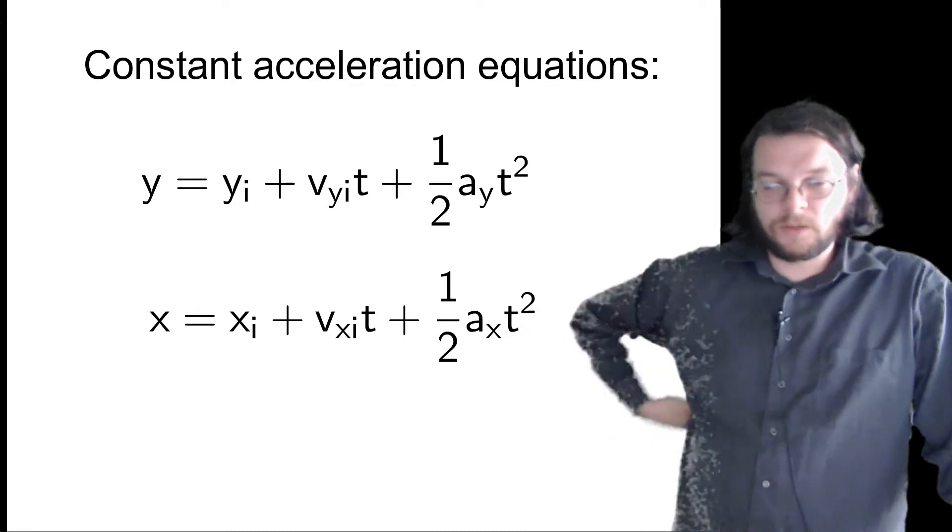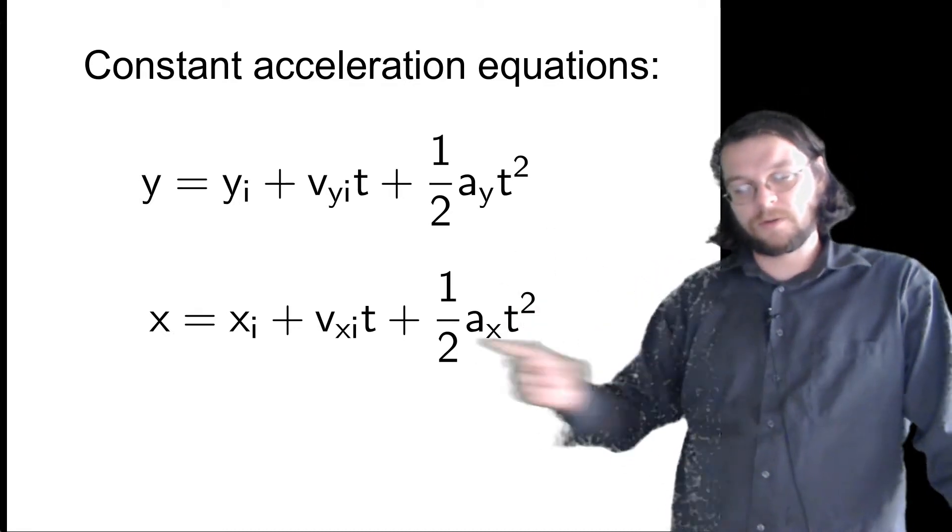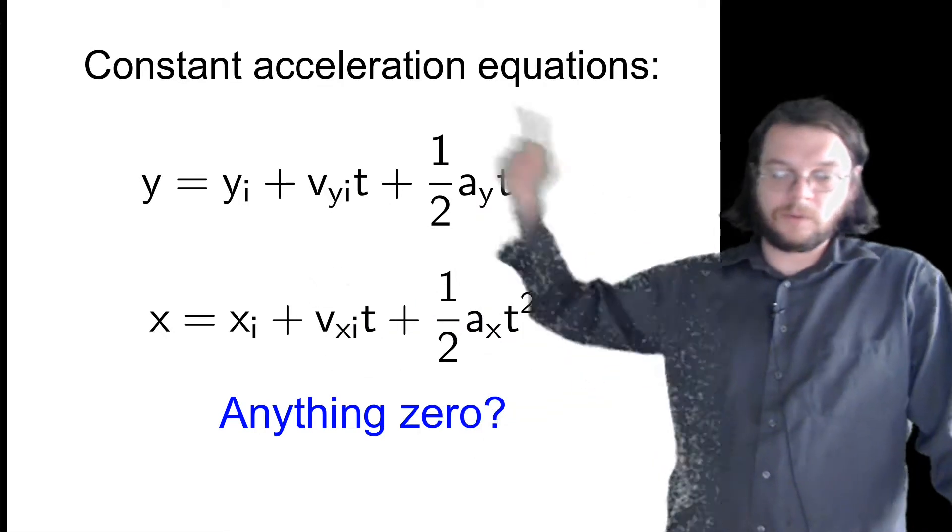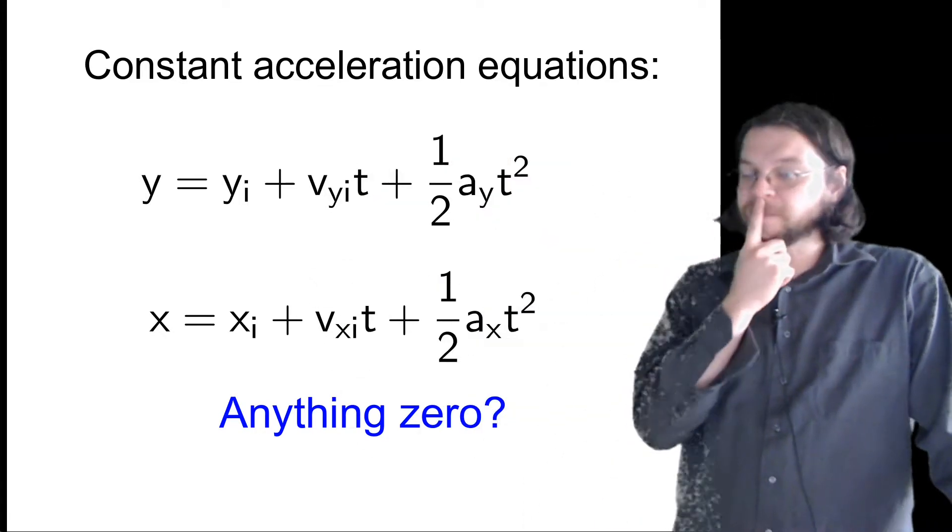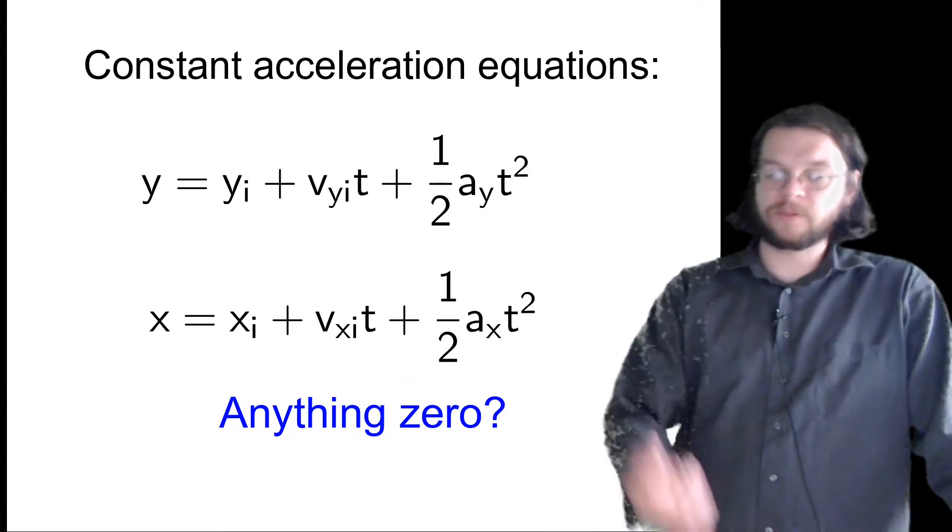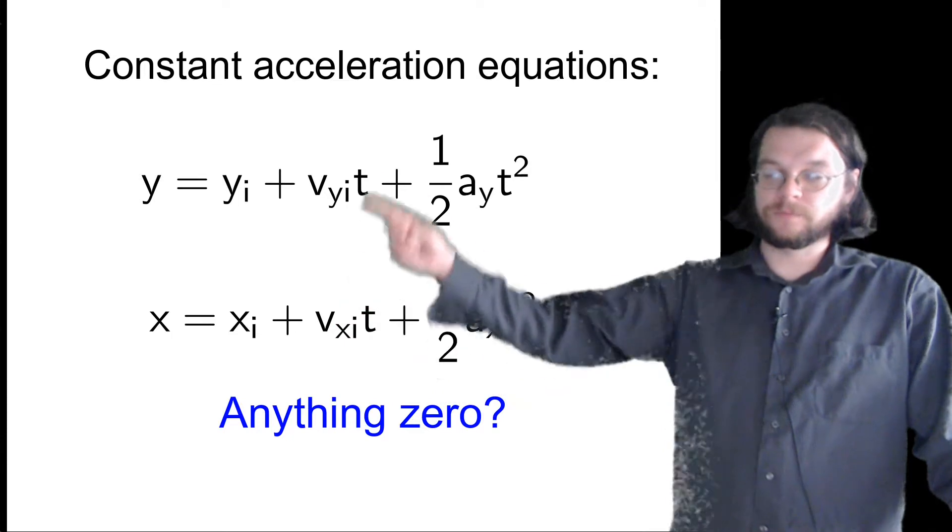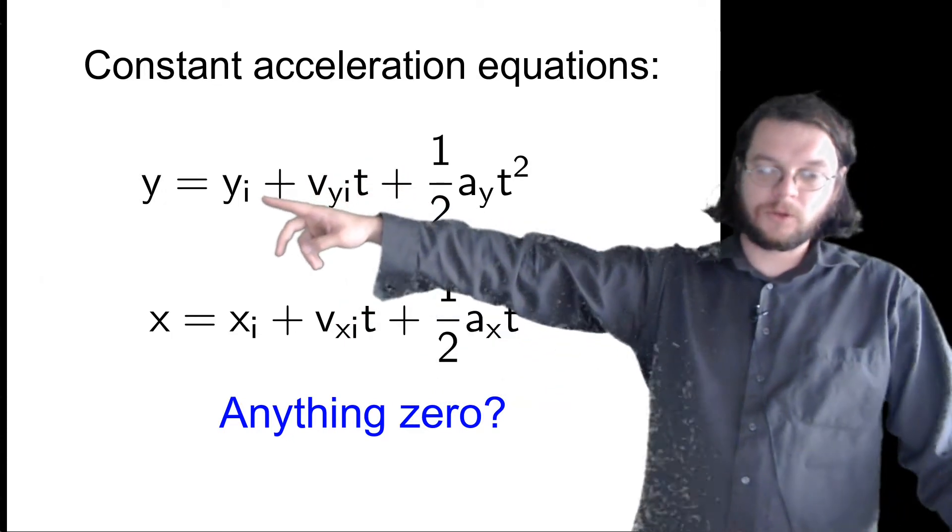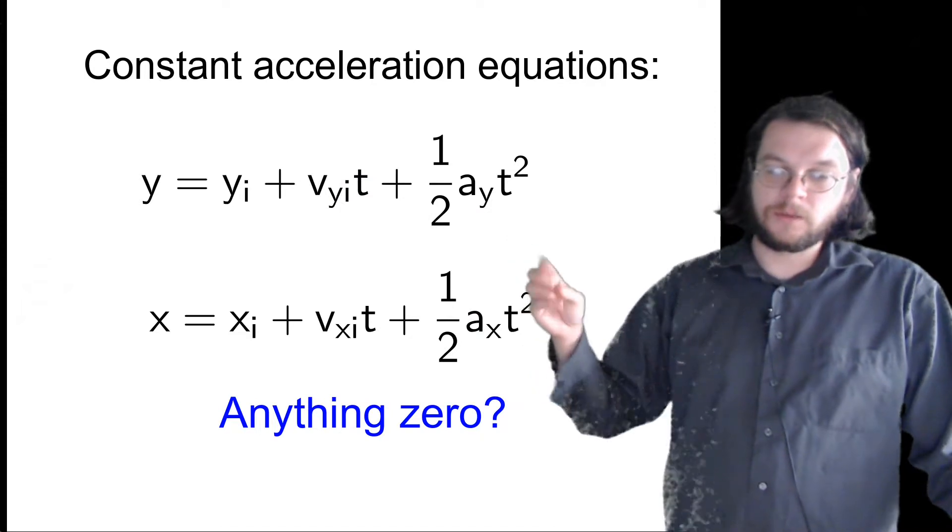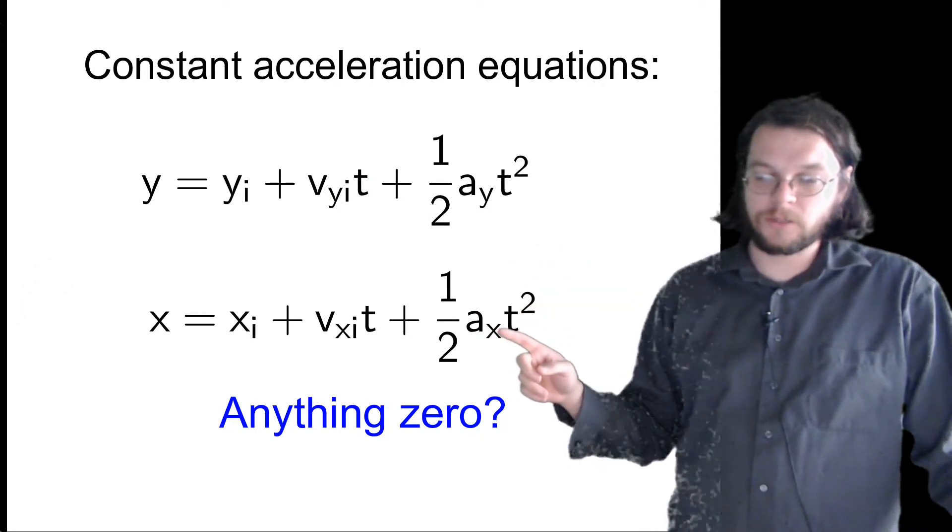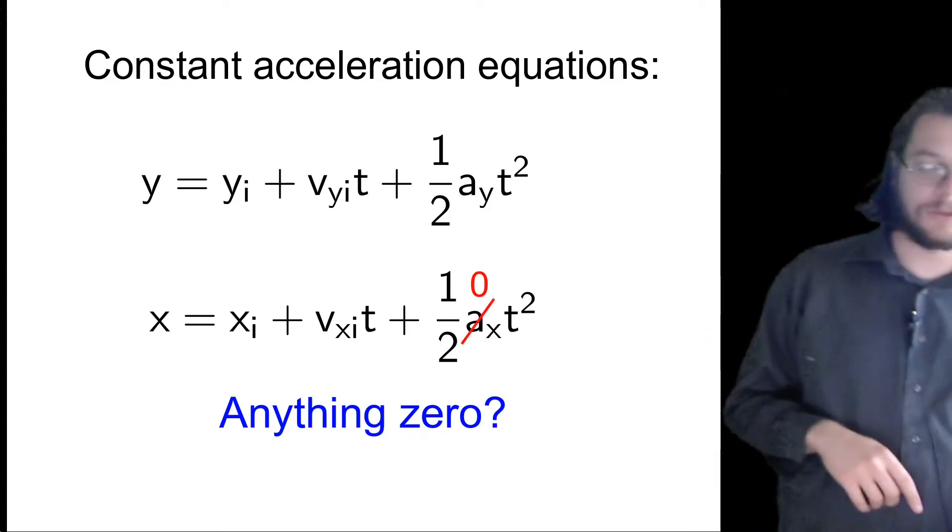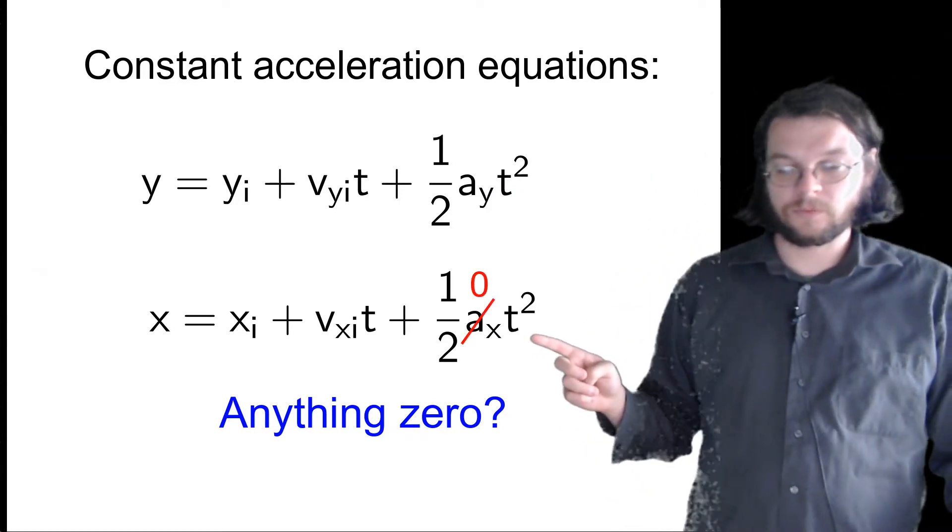But sometimes one or both of these accelerations are zero. So in the thing that we just watched, typically the x direction is the horizontal direction, the y direction is the vertical. Are any of these things zero in what we just watched? So let's think about that for a second. Well, the initial velocities, we're tossing the ball sort of at a 45 degree angle. So those initial velocities are not going to be zero. The horizontal speed is not changing. And so that suggests that the acceleration in the x direction is zero, but the vertical speed was changing, which suggests that the acceleration in the y direction was non-zero.